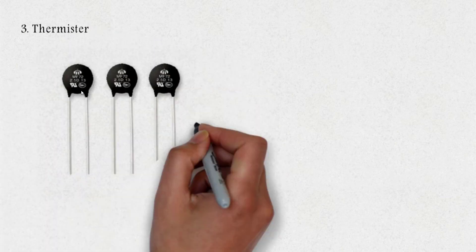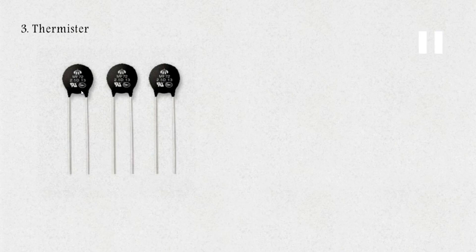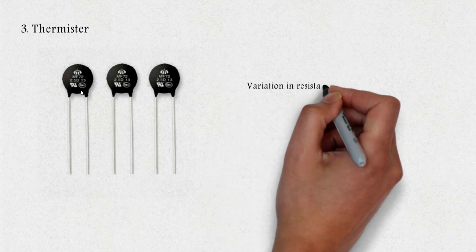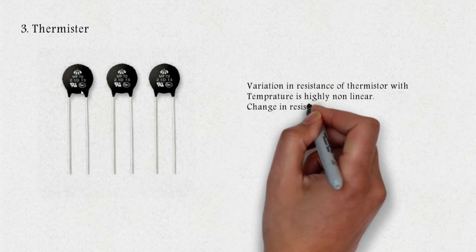At number three we have thermistor. Thermistor is short for thermal resistor. They are generally made up of semiconductors. Most thermistors have negative coefficients of resistance with temperature. Thermistor is a highly sensitive device, but with sensitivity comes the loss of linearity. A thermistor does not show linear relationship with temperature.